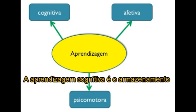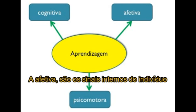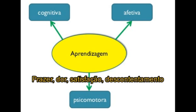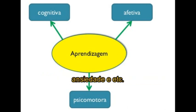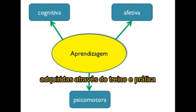A aprendizagem cognitiva é o armazenamento organizado de informações na mente de quem aprende. A afetiva são os sinais internos do indivíduo: prazer, dor, satisfação, descontentamento, ansiedade, etc. A psicomotora envolve respostas musculares adquiridas através do treino e prática.